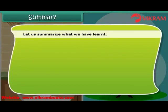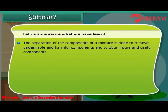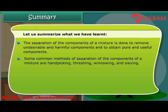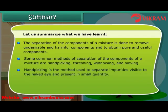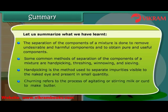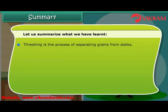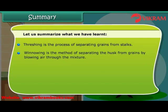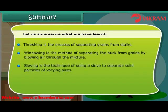Let us summarize what we have learned. The separation of the components of a mixture is done to remove undesirable and harmful components and to obtain pure and useful components. Some common methods of separation are hand-picking, threshing, winnowing and sieving. Hand-picking is the method used to separate impurities visible to the naked eye and present in small quantity. Churning refers to the process of agitating or stirring milk or curd to make butter. Threshing is the process of separating grains from stalks. Winnowing is the method of separating the husk from grains by allowing air through the mixture. Sieving is the technique of using a sieve to separate solid particles of varying sizes.